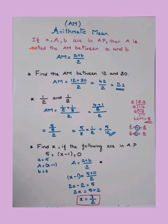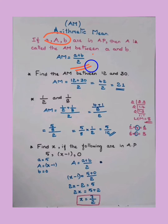If a, A, b are in AP, then A is called the arithmetic mean between a and b. The formula to calculate the arithmetic mean is AM = (a + b) / 2. For example: find the arithmetic mean between 12 and 30.